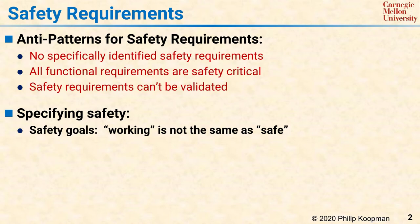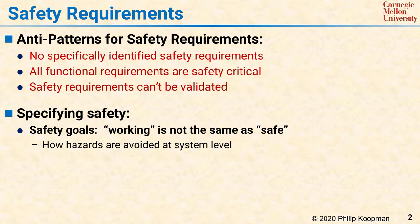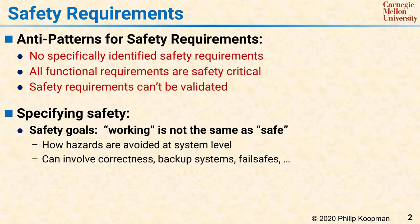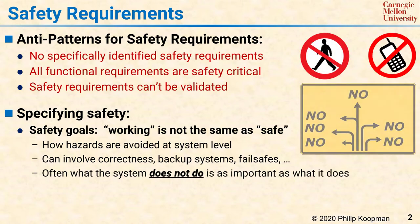Safety goals are the highest level of system requirements that are designed to ensure that mishaps or other loss events cannot happen. In general, each identified critical system mishap traces to a hazard, and that hazard is mitigated by a safety goal. Safety goals can be achieved by some combination of ensuring software correctness, having backup systems, creating fail safes, creating safety net architectures, and so on. Thus, picking a safety goal tends to influence the architectural approach taken to achieve safety. It is important to realize that safety is often much more about what the system does not do than what it actually does in normal functionality.